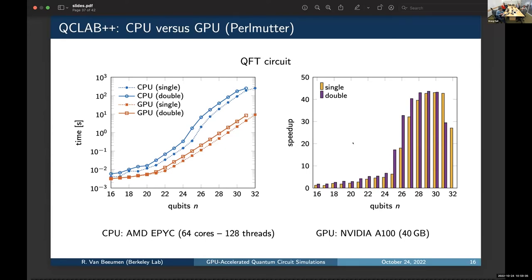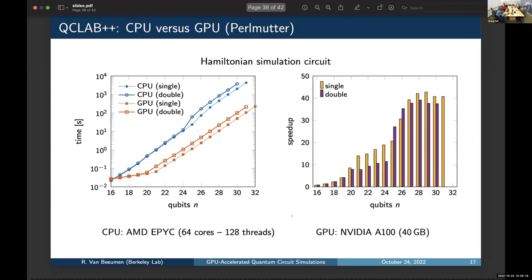And then, here on the right, you see the corresponding speed-up factors from CPU to GPU, where we get, for example, up to 40 speed-up factors for a large number of qubits. Now, if we look to the Hamiltonian circuit, basically, it has a very similar behavior. So, for the GPU, very nice behavior, whereas for the CPU, at a certain point, the caching effects will become very important.